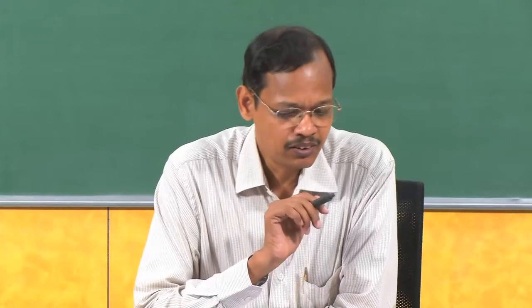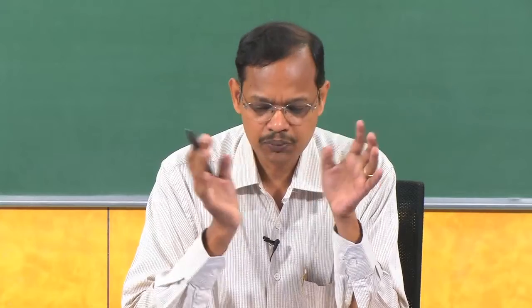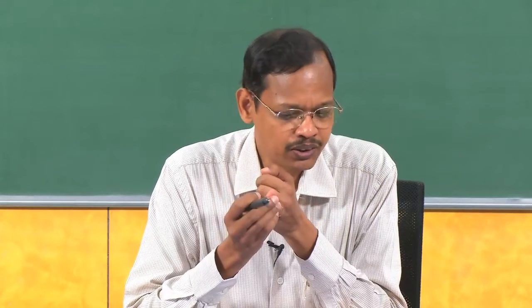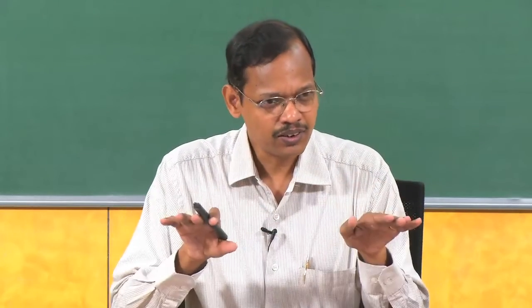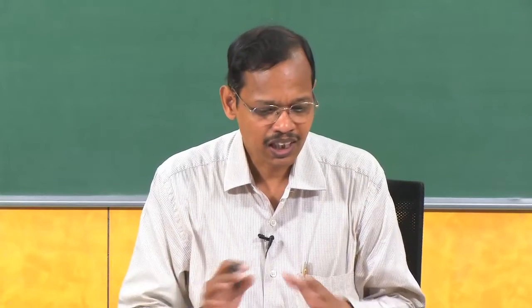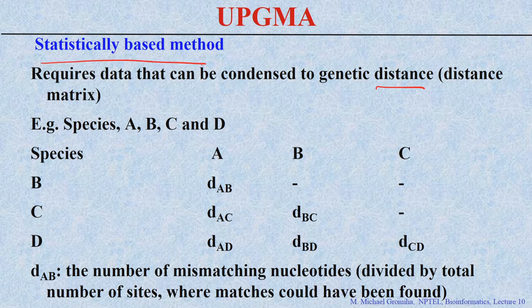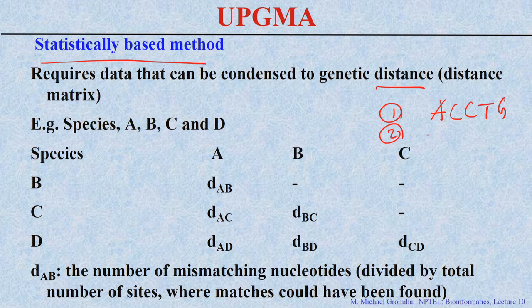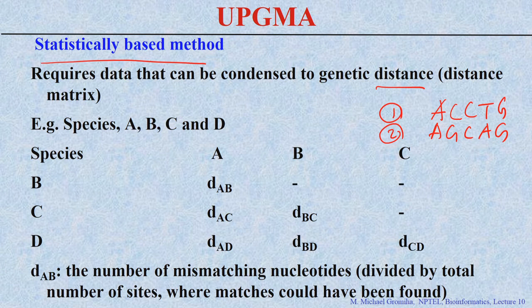UPGMA is a statistically based method. It requires the data to be condensed to a genetic distance. We can use DNA sequences or protein sequences, look at how they differ from each other, and calculate the distance. For example, if sequence 1 is ACCTG and sequence 2 is AGCAG, how do you calculate the distance between these two in the two-dimensional case?